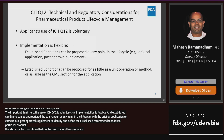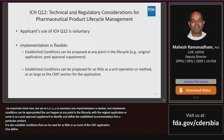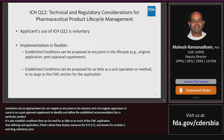It's also flexible in the sense that it can be used for as little or as much of the CMC sections of the application as the applicant desires. For example, it can be defining established conditions for one specific unit operation, or it can be for everything in Module 3 — from drug substance and drug product, manufacturing processes, container closure systems, analytical methods, manufacturing facilities, etc. The flexibility spans that spectrum.